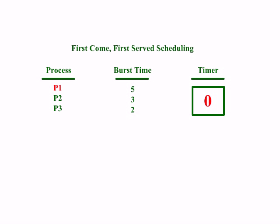The first algorithm we will be seeing is FCFS, or First Come First Serve Scheduling. First Come First Serve is an operating system process scheduling algorithm and a network routing management mechanism that automatically executes queued requests and processes by the order of their arrival. FCFS provides an efficient, simple, and error-free process scheduling algorithm that saves valuable CPU resources. It uses non-preemptive scheduling in which a process is automatically queued and processing occurs according to an incoming request or process order.